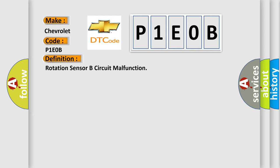And now this is a short description of this DTC code: Rotation sensor B signal does not change.